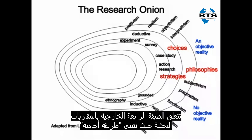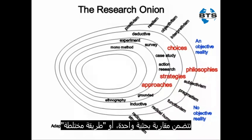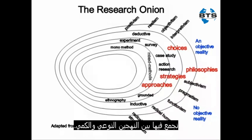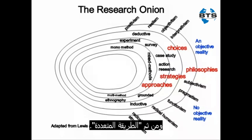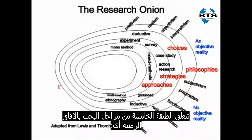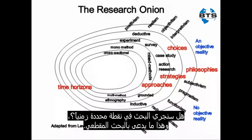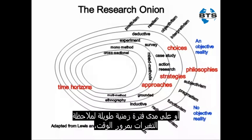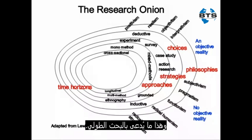The fourth layer from the outside layer of the research onion concerns the research approaches. Will we adopt a mono method involving one research approach, fixed methods where we combine both qualitative and quantitative approaches, or multi-methods? The fifth layer from the outside of the research onion talks about the time horizons — will we conduct the research at one point in time, which is cross-sectional, or over a long period of time to observe changes, which is longitudinal research.